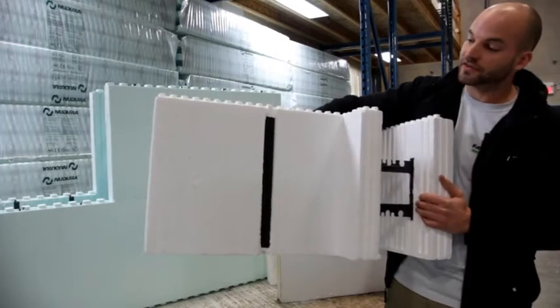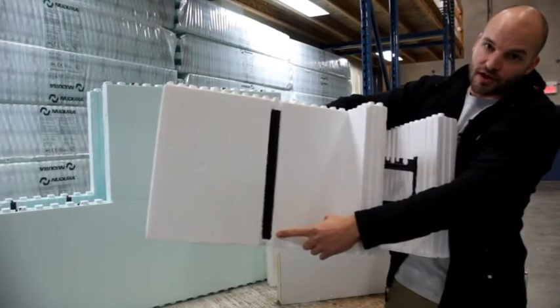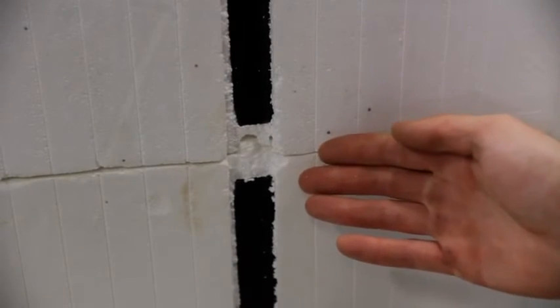Many ICFs the plastic web stops short of the top and bottom of the ICF block. Now when these courses are stacked on top of each other this is going to result in gaps in between our plastic webs.